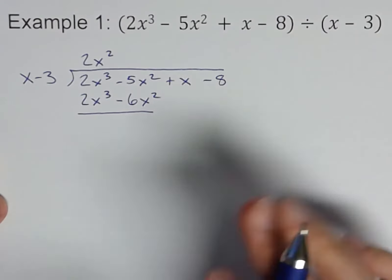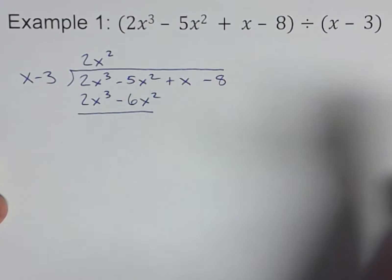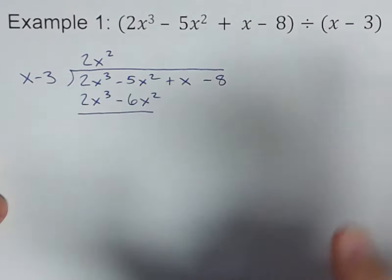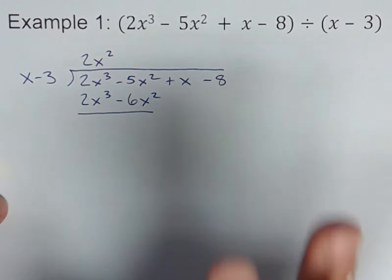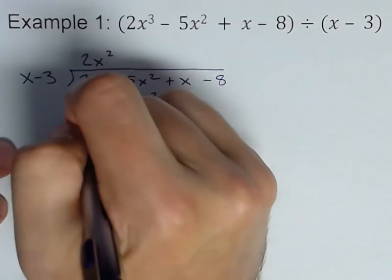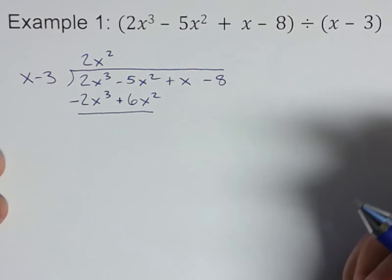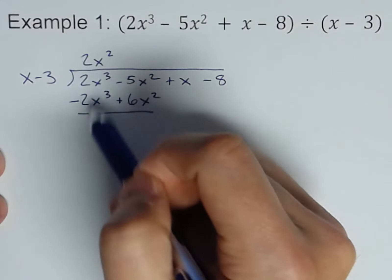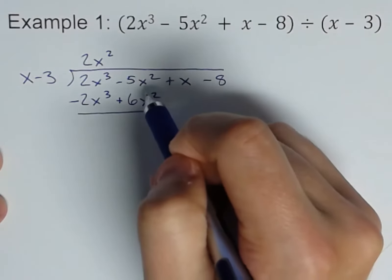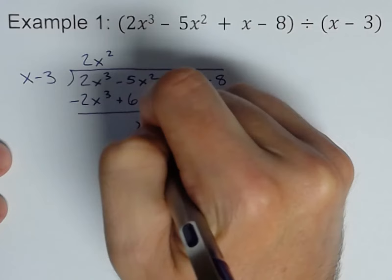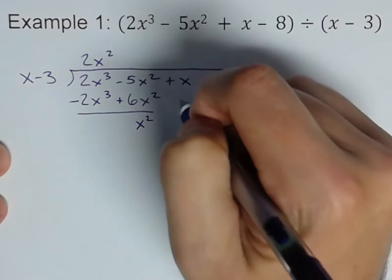Now think about what we did when we did a straight-up long division problem with numbers. Now we subtract. This is a big step and I see people make silly mistakes here, so I like to go and actually change all my signs. This first term goes away—it always will. -5x² + 6x² is x² left behind, and then bring that next one down, so plus x.